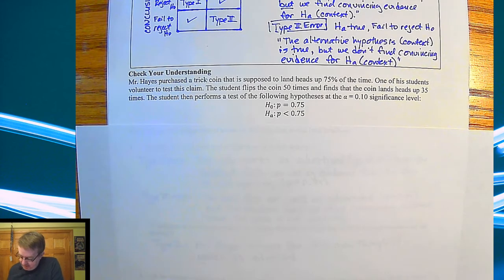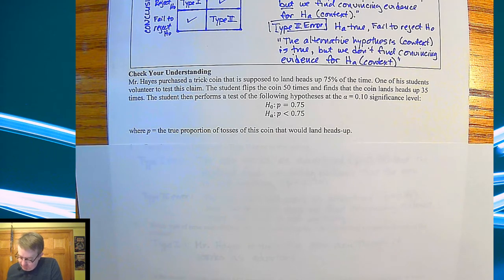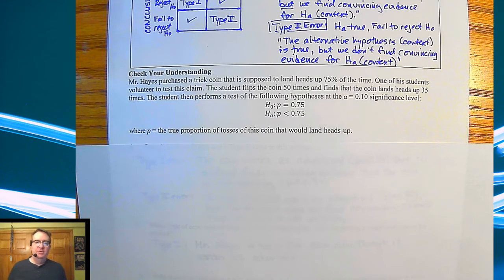It's less than 75%. So, where P is the true proportion of tosses the coin would be landing heads up, go ahead, pause the video, go through some of these examples. Notes again are linked down below, and we'll see you in a minute.